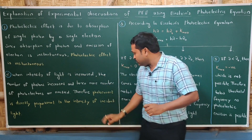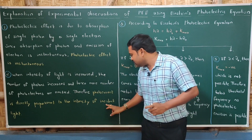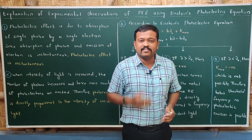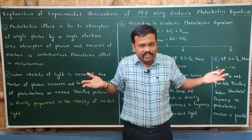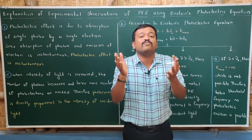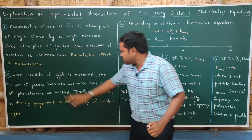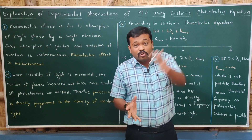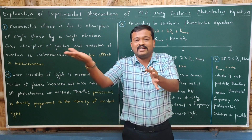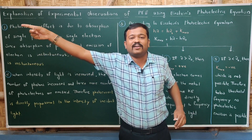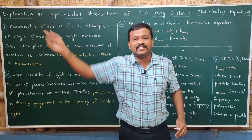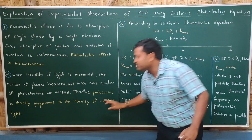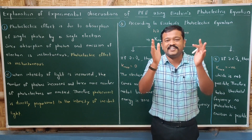Now let us see why photocurrent is directly proportional to the intensity of incident light. When intensity of incident light increases — that is, when brightness increases — the number of photons increases. If the number of photons increases, the number of photoelectrons emitted increases. If the number of photoelectrons increases, photocurrent increases. Therefore, photocurrent is directly proportional to the intensity of incident light.